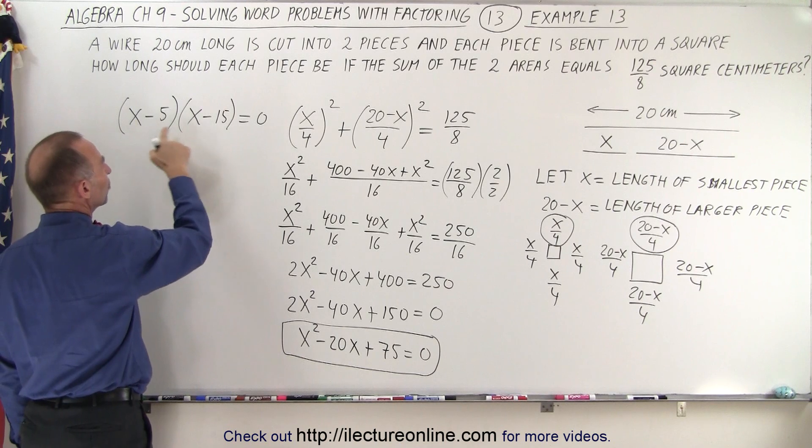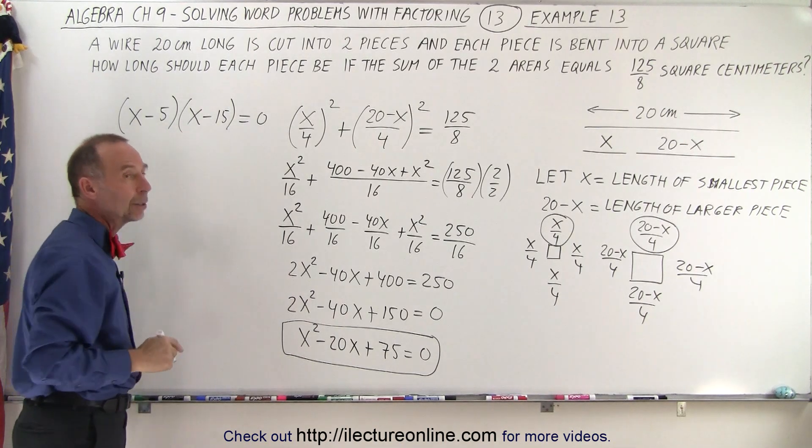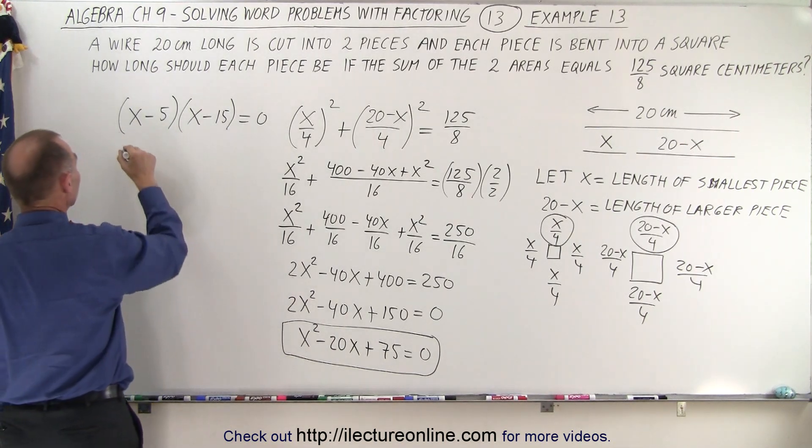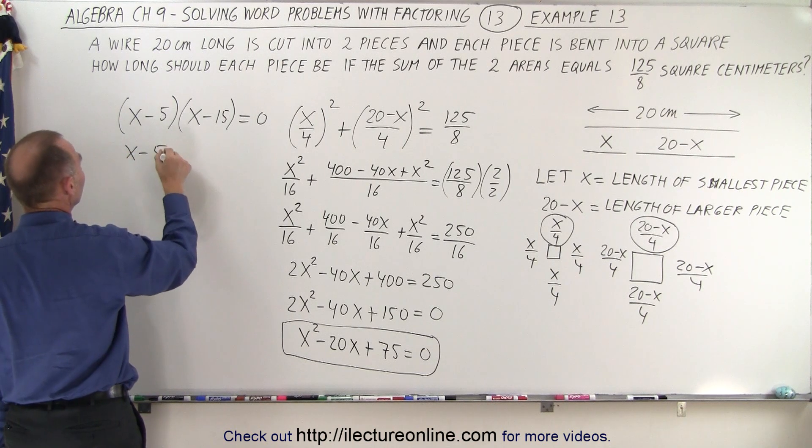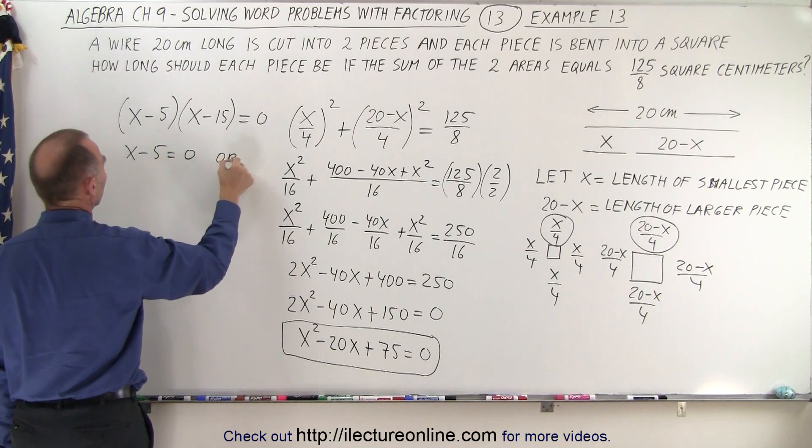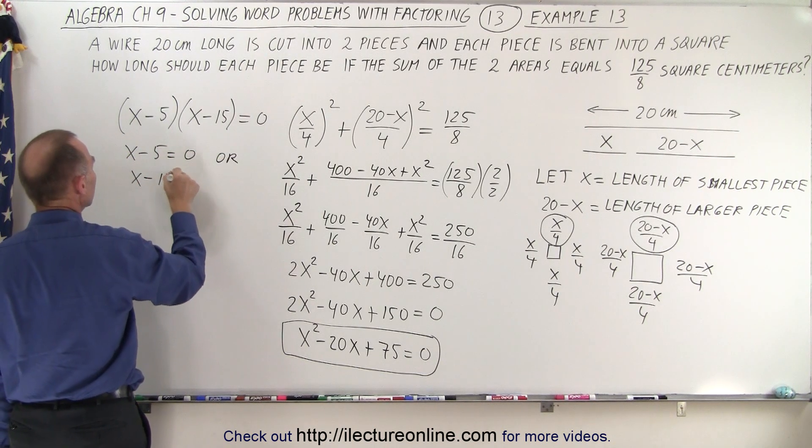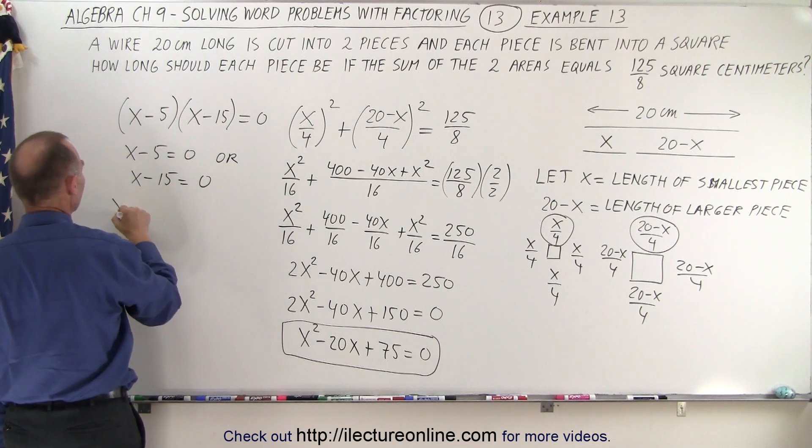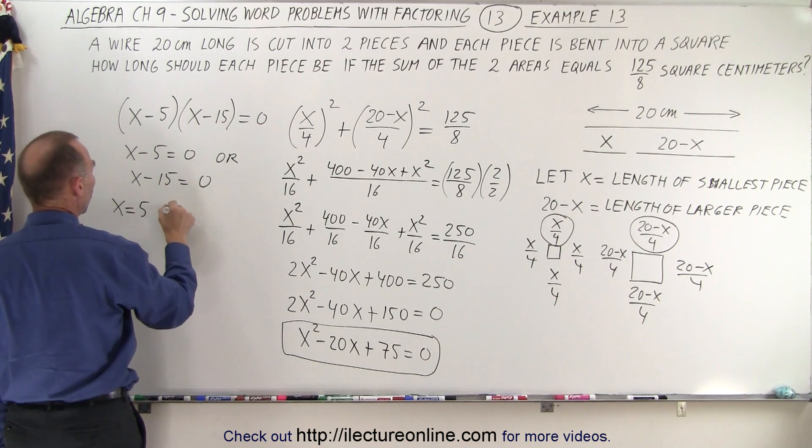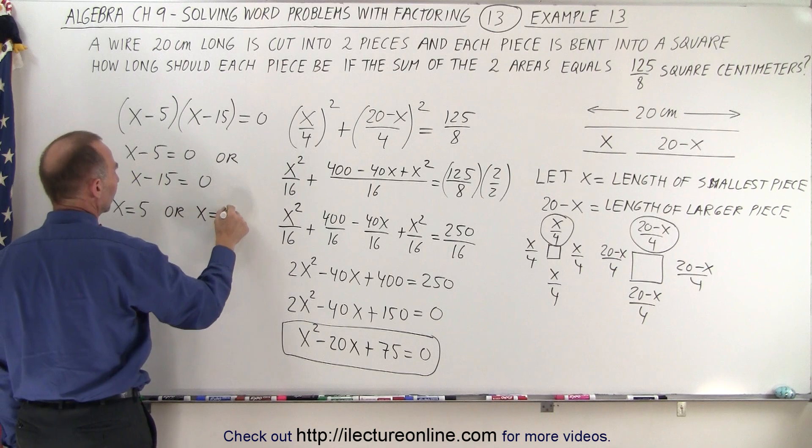Now when we have two binomials multiplied together equaling 0, that means that either the first binomial x minus 5 equals 0, or x minus 15 is equal to 0, so x equals 5 or x equals 15.